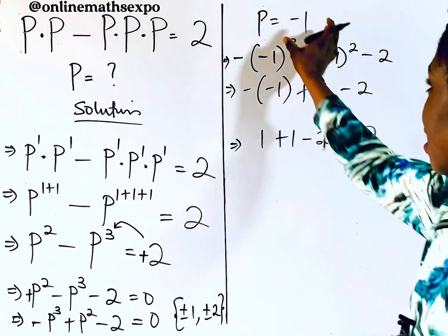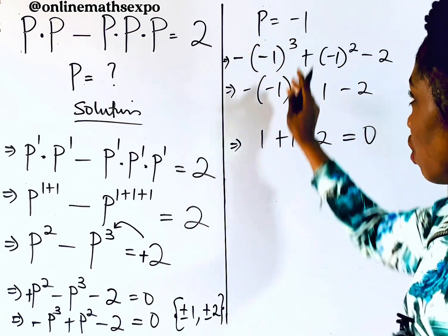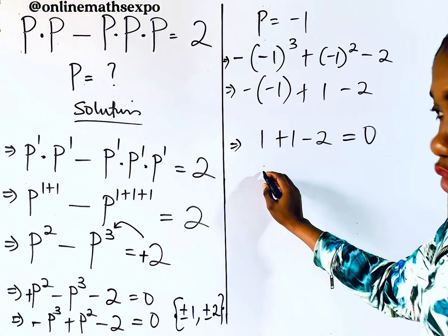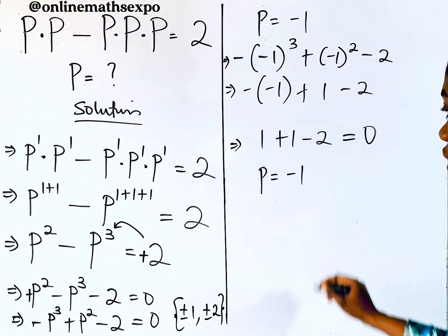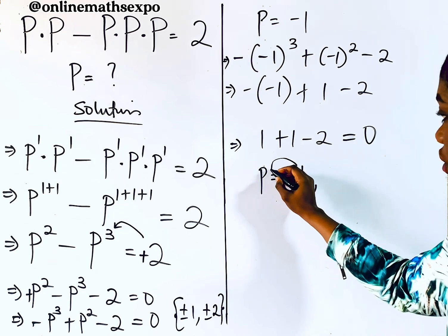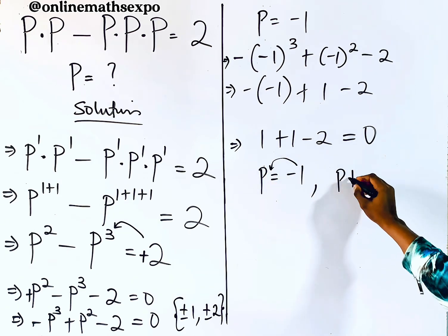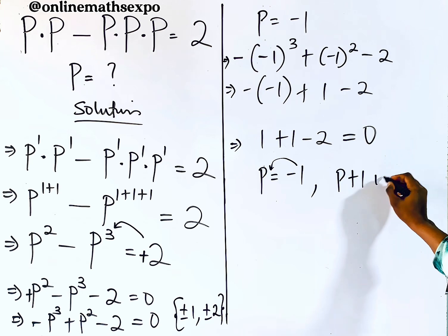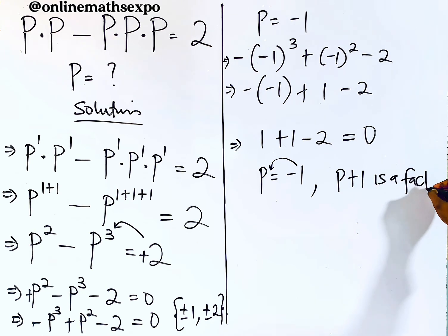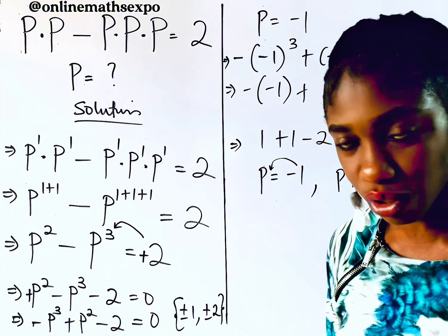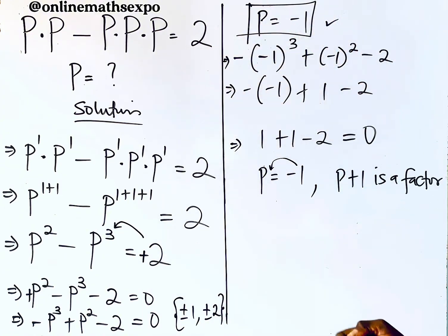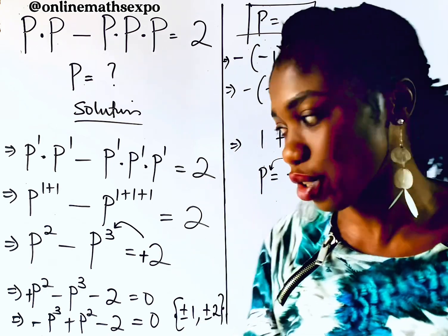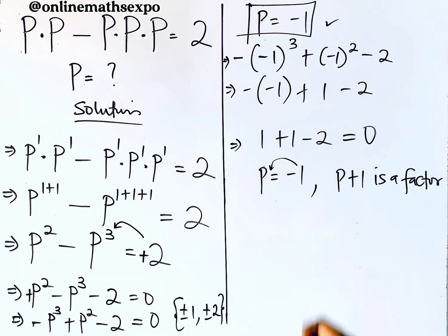Since p = −1 is a solution, we turn it into a factor. If p equals −1, then taking it to the left side gives us (p + 1) as a factor. We'll use this to find the remaining two solutions using long division.